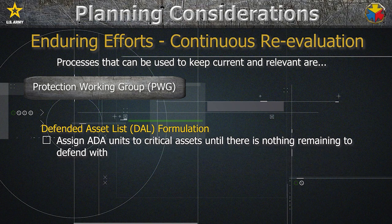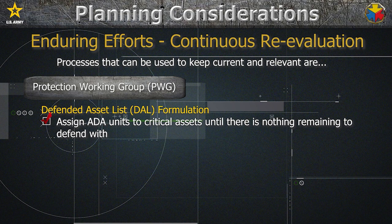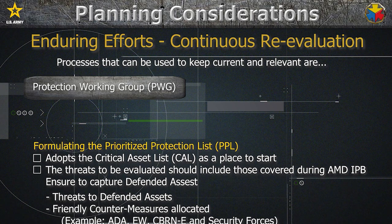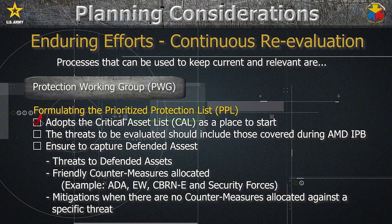Finally, we'll do the Defended Asset List, which is the finalization and allocation of ADA units to critical assets until there's nothing remaining to defend them with. All of this will combine in forming the PPL. The PPL adopts the CAL as a place to start. The threats to be evaluated should include those covered during AMD IPB — this includes UAS threats — so you can see what enemy UAS are likely to target and allocate available resources to protect those targets from enemy destruction and observation. The PPL goes through the process of adopting mitigation measures when there's nothing left to defend a critical asset against each threat.